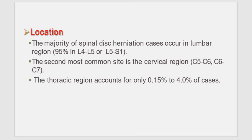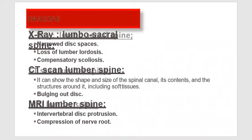The majority of spinal disc herniations occur in the lumbar region — 95% at L4-L5 and L5-S1 — and the second most common site is the cervical region at C5-C6 or C6-C7. The thoracic region accounts for only 0.15% to 4%. Diagnosis is based on history, symptoms, and physical examination. Lumbar X-rays may show narrow discs, loss of lumbar lordosis, and compensatory scoliosis. A CT scan shows the shape and size of the spinal canal and surrounding structures, and MRI of the lumbar spine may show intervertebral disc protrusion or compression of the nerve root.